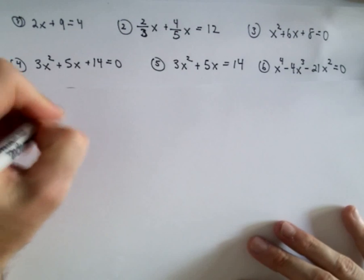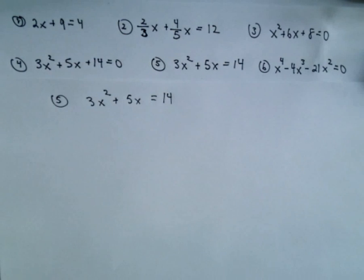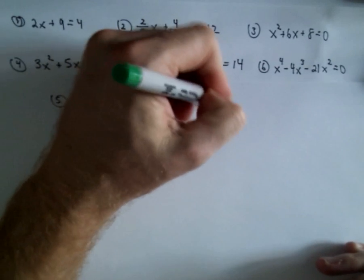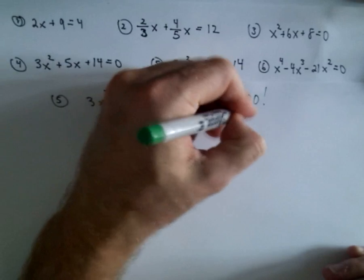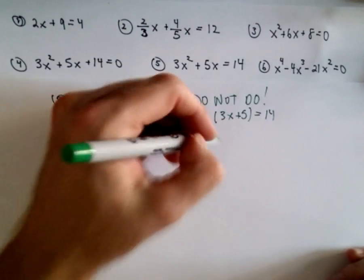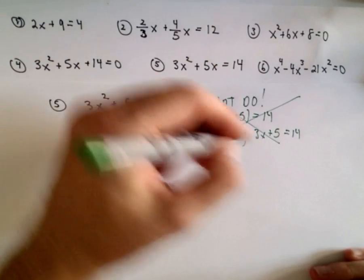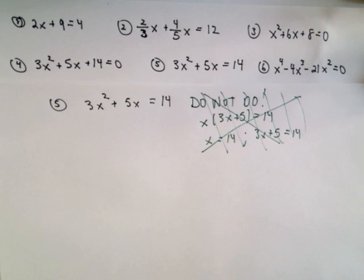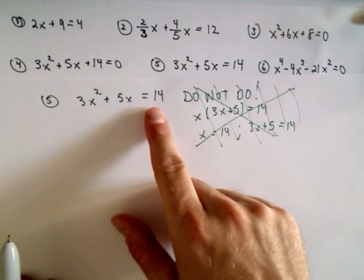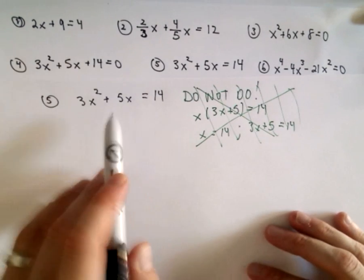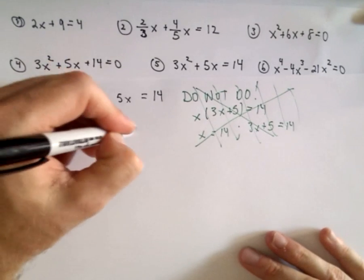Number 5 looks pretty similar: 3x squared plus 5x equals 14. Do not make the common mistake — people will sometimes factor the left side, pull an x out to get x times (3x plus 5) equals 14, and then say x equals 14 and 3x plus 5 equals 14. That's a big big no-no. Be careful. Anytime you have a quadratic equation, you want to make one side equal to zero and then try to factor it. So I'm going to subtract 14 from both sides.